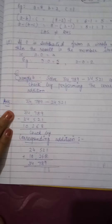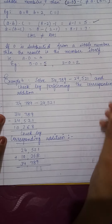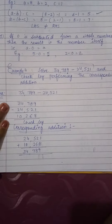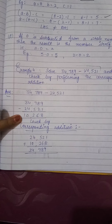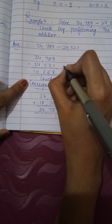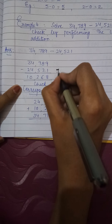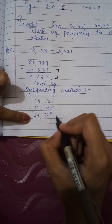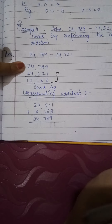Now let's move to Example 4. You have to subtract first, and then check by performing the corresponding addition to verify whether your answer is correct. Firstly, perform the subtraction to get the answer. For checking, you are going to add the answer (difference) and the smaller number together. When you add these two, the larger number should come. If the larger number is coming, that means your answer is correct.